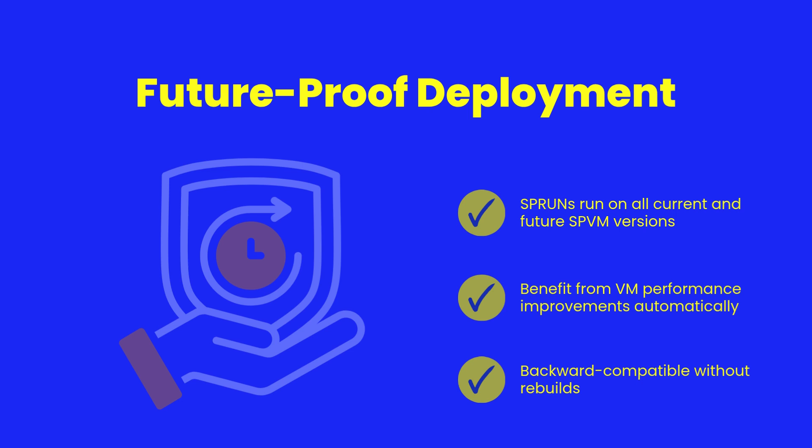Once deployed, your .sp-run application is future-proof. Because it runs inside the ShearPower virtual machine, any improvements to ShearPower's runtime automatically benefit your deployed code. You don't have to rebuild or redeploy — performance just gets better over time.